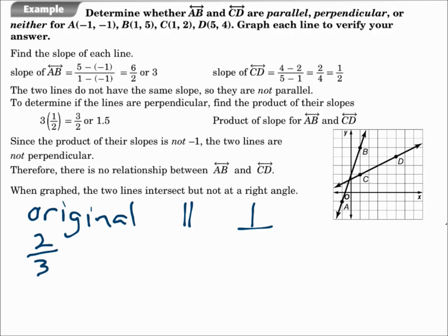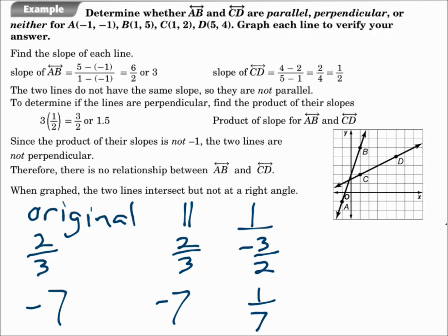So what if you had a slope of 2 thirds for your line? The slope of the parallel line would be the same — 2 thirds. The slope of the perpendicular line would be the negative reciprocal, negative 3 halves. Perpendicular slopes are the negative reciprocal: you flip the fraction and you change the sign. 2 thirds times negative 3 halves is negative 1 — that's what you need for perpendicular slopes. What if one line has a slope of negative 7? The parallel line also has a slope of negative 7, and for perpendicular, take the opposite reciprocal, which would be positive 1 seventh.